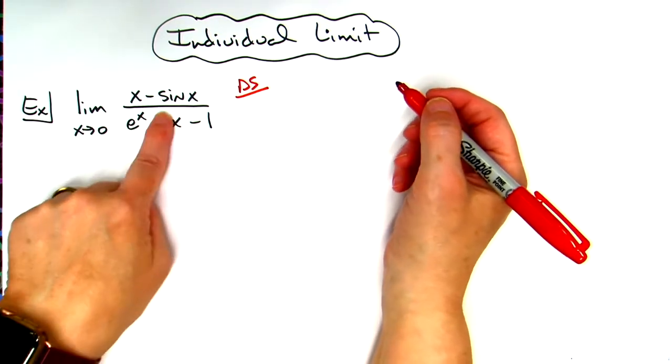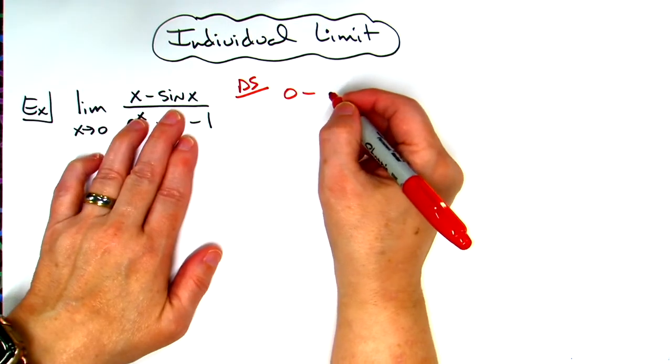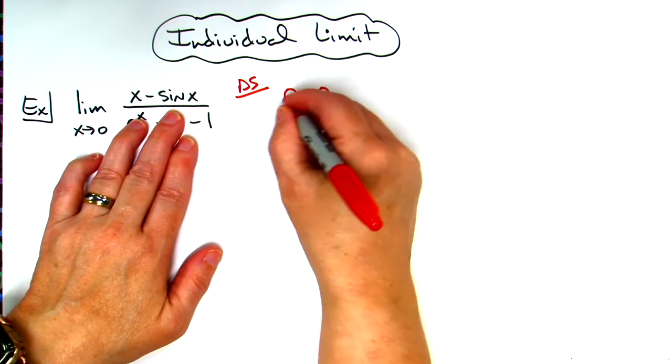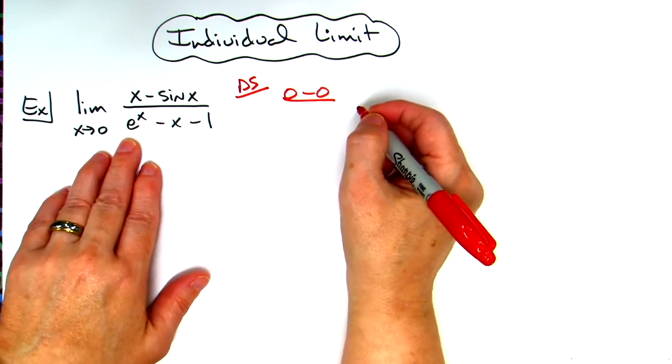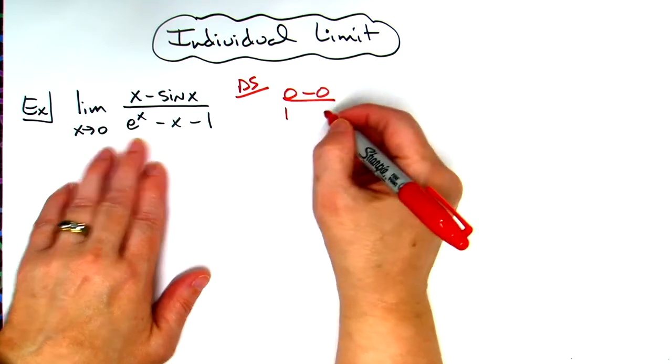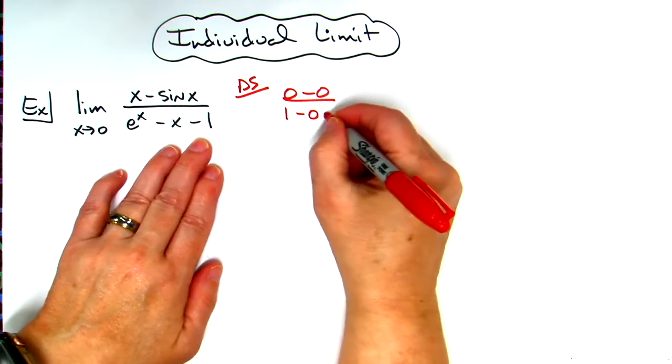I'm going to take zero and plug it into my numerator. I'll have zero minus sine of zero, which is zero. When I plug in zero in the denominator, I'll have e to the zero, which is one, minus zero, minus one.